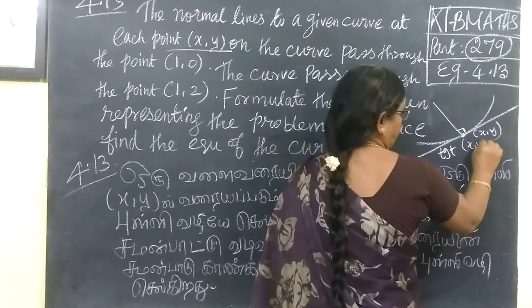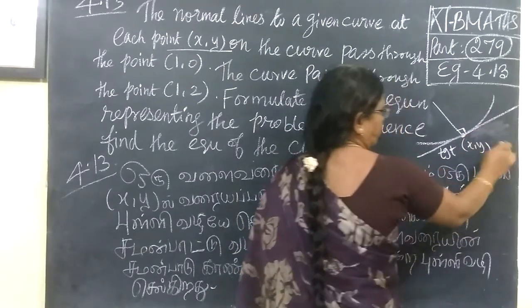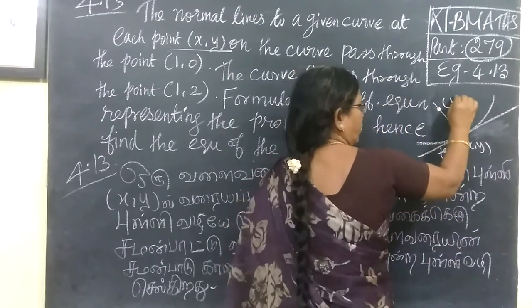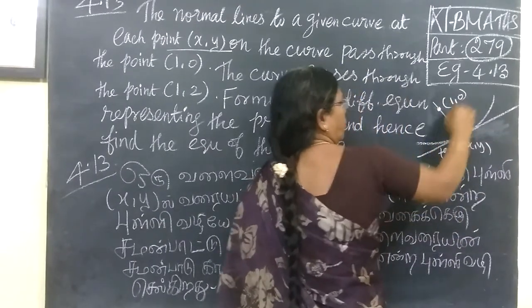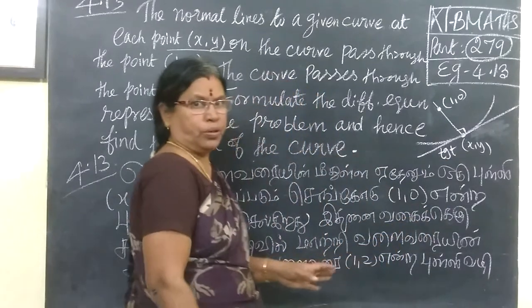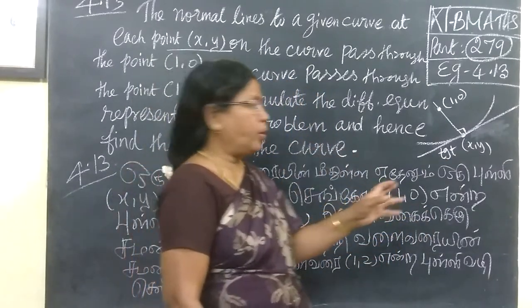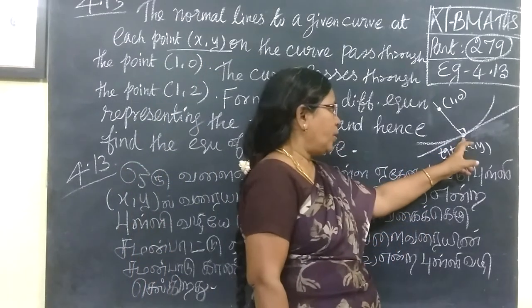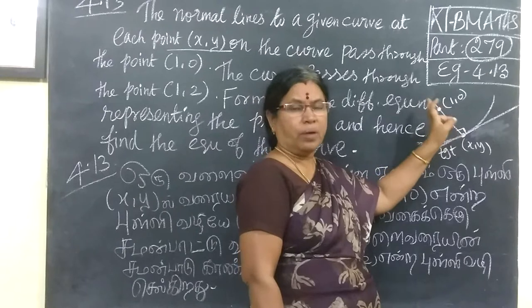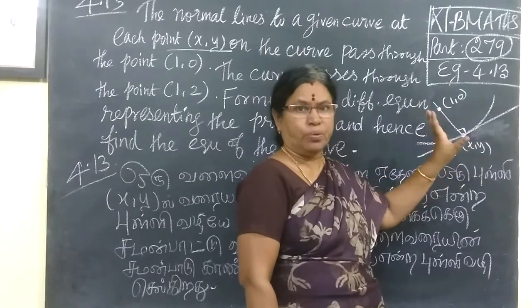Any points? It is the same way to the curve. And (1, 0) is the point. So the normal at the point X, Y passes through (1, 0). (1, 0) will be on the curve.